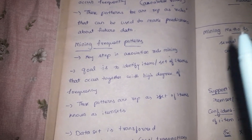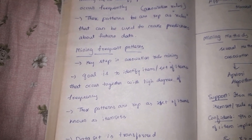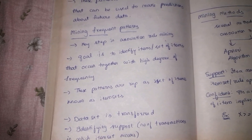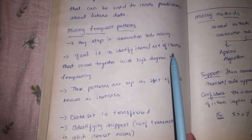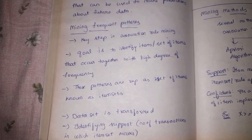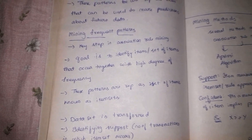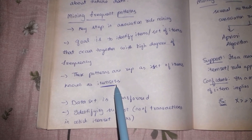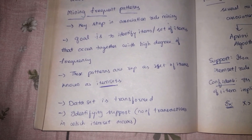This is basically the key step in association rule mining. The main aim is to identify items that occur repeatedly. These sets of items which occur together with a high degree of frequency are represented in the form of item sets.